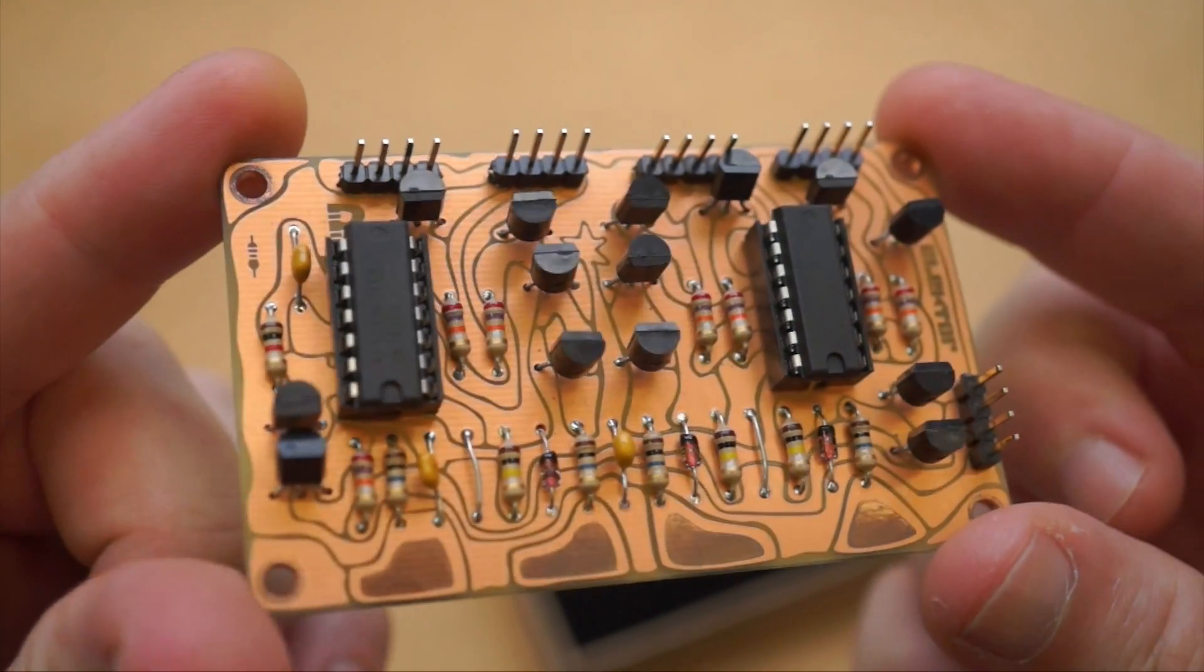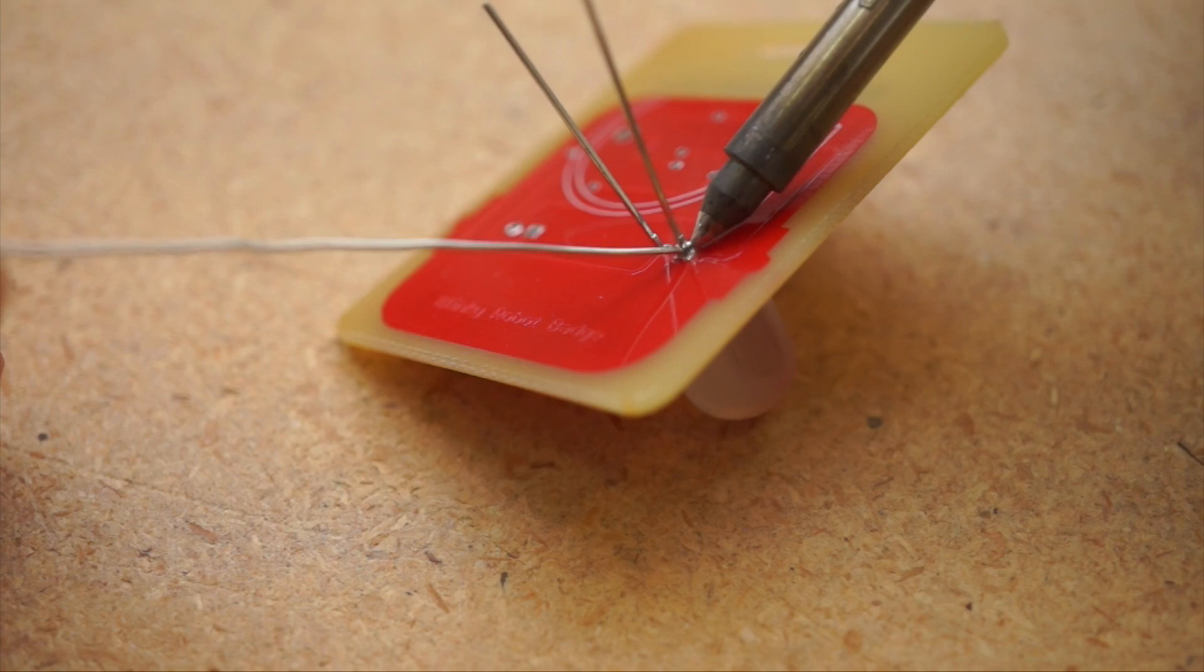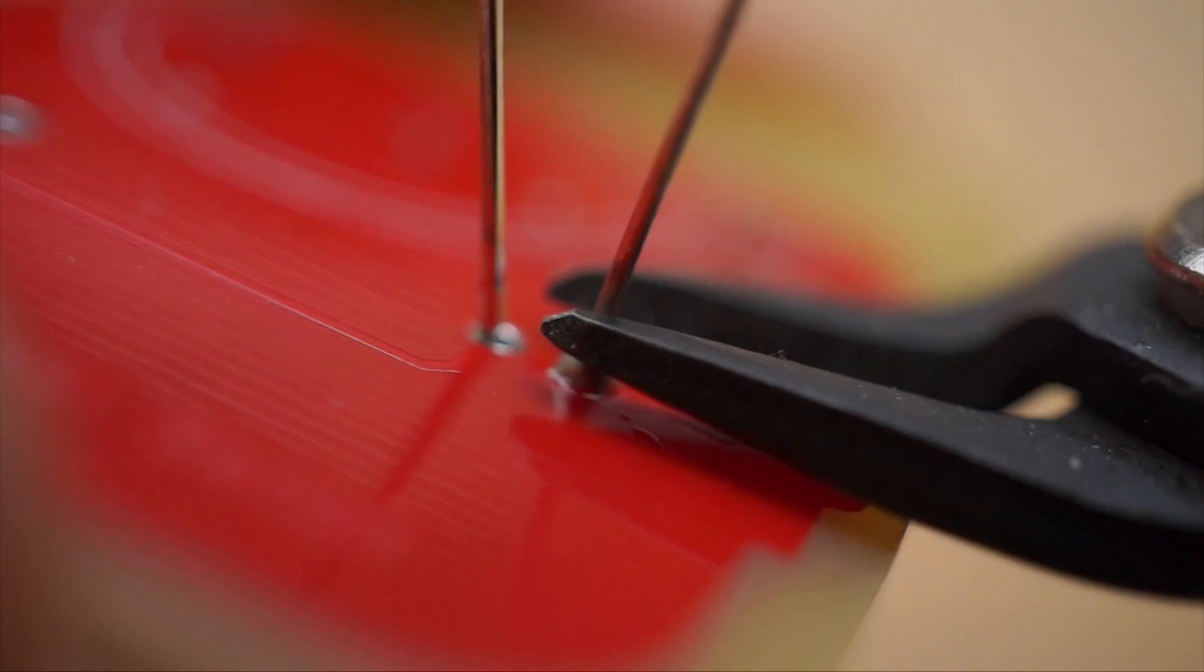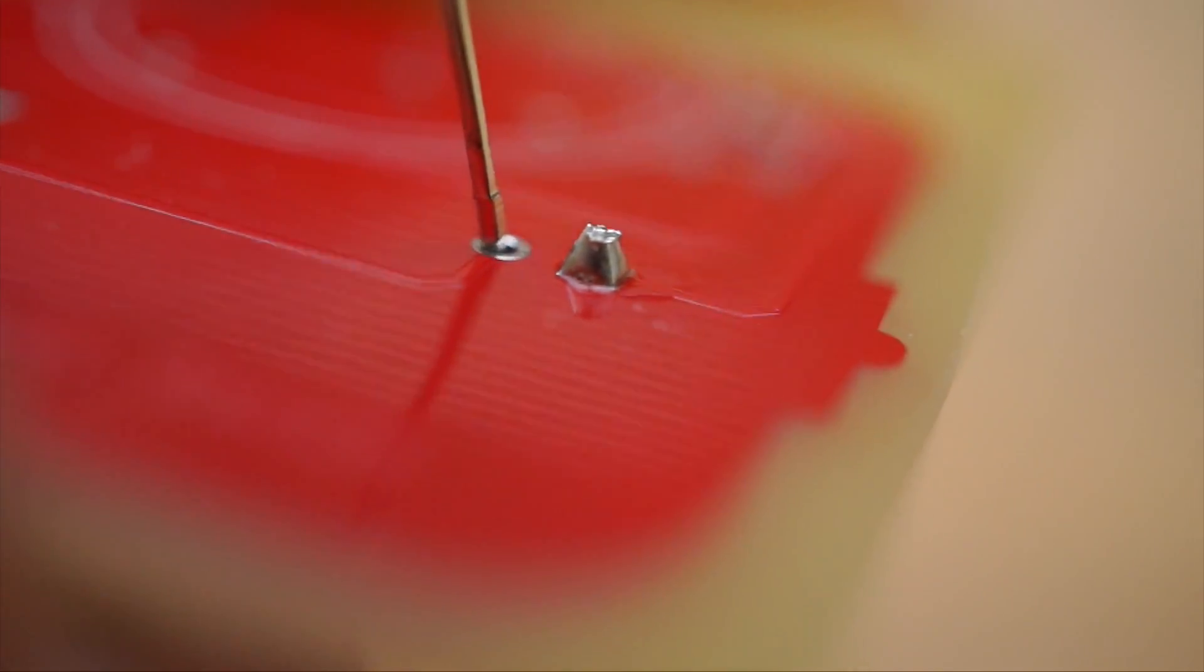Typically when you solder a connection together on a through-hole circuit board like this, you get what looks like a little mountain of solder. Then you can come back through and trim it down and maybe you get something like this, and it's tidy and it gets the job done.